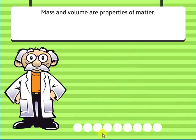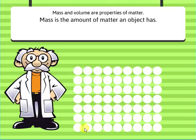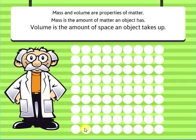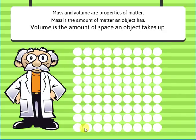Mass and volume are properties of matter. Mass is the amount of matter an object has. Volume is the amount of space an object takes up.